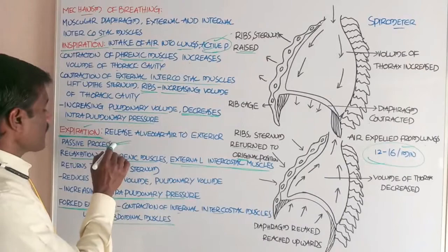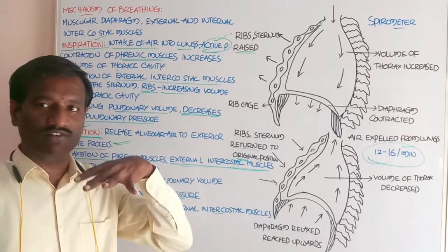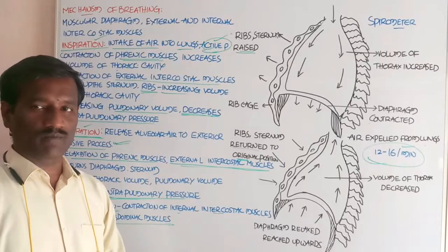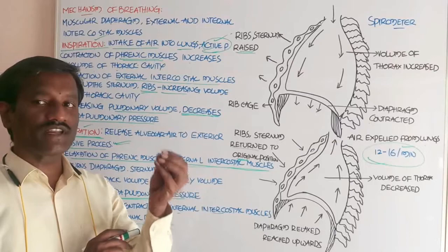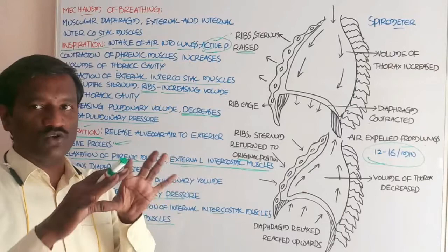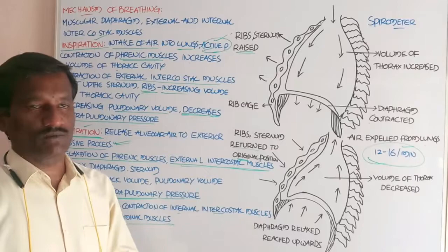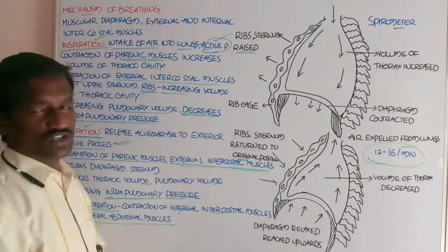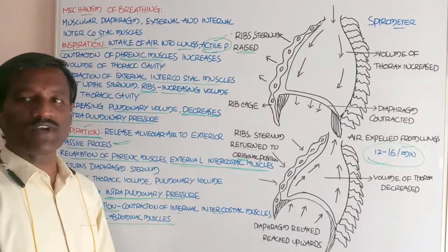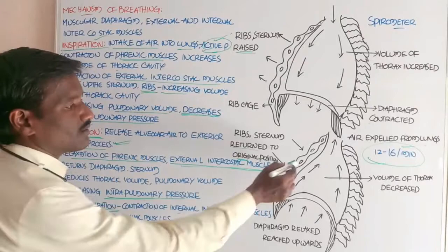In expiration, two types of muscles go into relaxation. First, relaxation of the phrenic muscles present in the diaphragm causes a decrease in the thoracic cavity anteriorly and posteriorly, and the diaphragm comes back into its original dome-shaped position. Second, relaxation of the external intercostal muscles present between the ribs causes the ribs and sternum to come back to their original position.